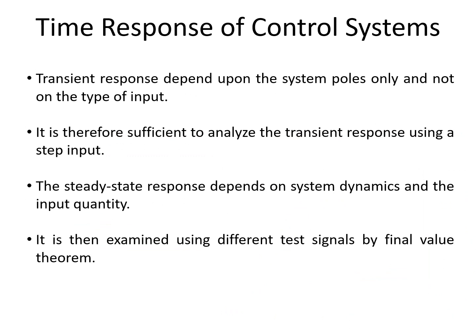Transient response basically depends upon the system poles only, and not on the type of input. It is therefore sufficient to analyze the transient response using only the step input. Whereas the steady state response depends upon the system dynamics and the input quality. It is therefore examined using different test signals by the final value theorem. Transient response is analyzed using the step input, while steady state response is analyzed using system dynamics and input quality.